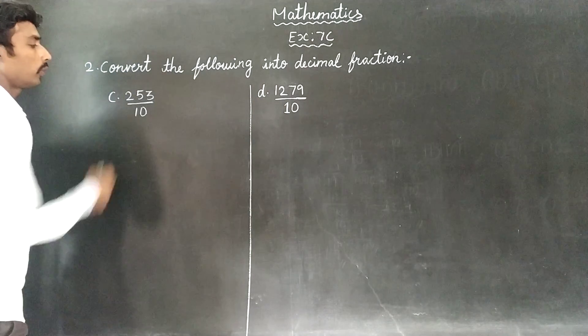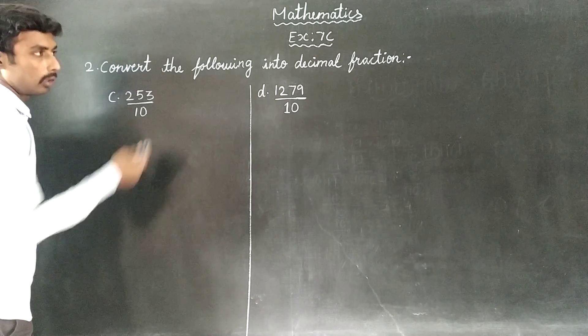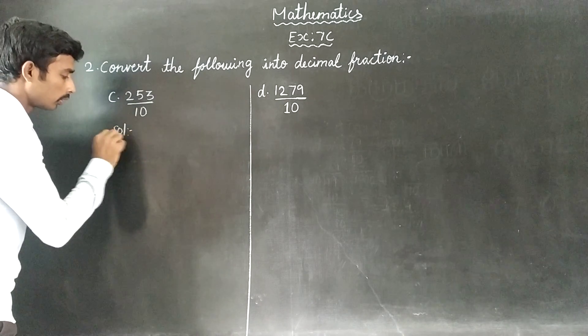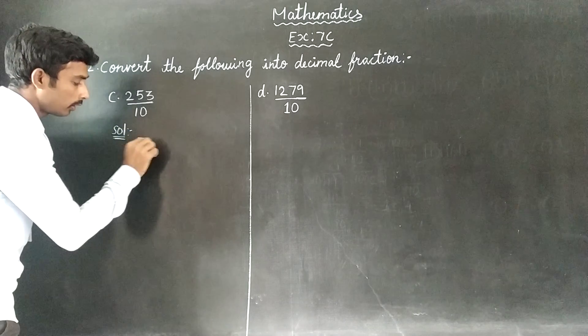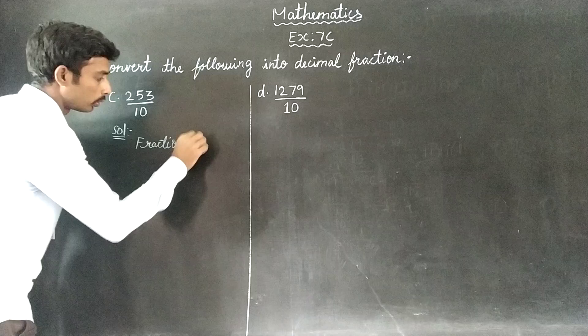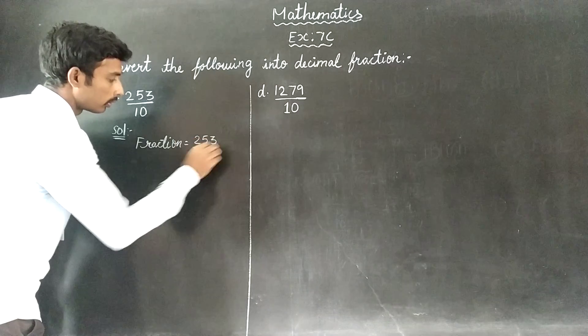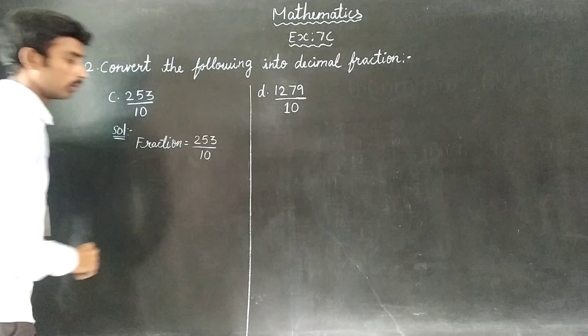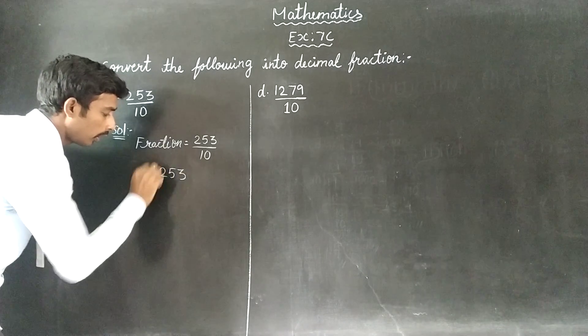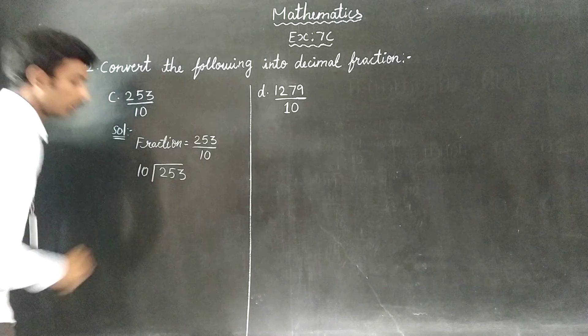The first sum, 253 by 10. Now we are going to convert to decimal fraction. 253 by 10, so we divide 253. Now we have this division.